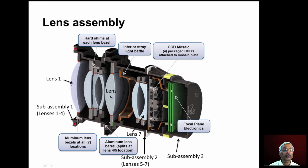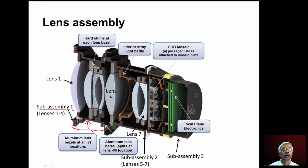Lenses one to four form sub-assembly number one. This is a split barrel. We have retainer rings to retain each lens, and between two retainer rings we have shim plates for adjusting the axial alignment of lenses.